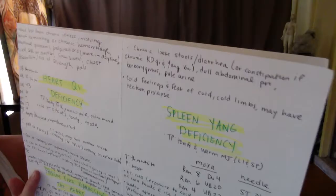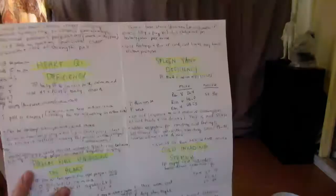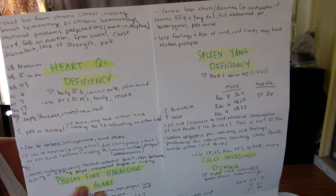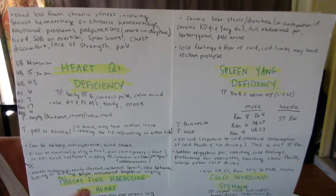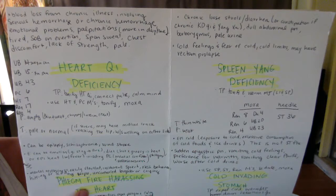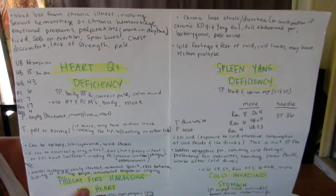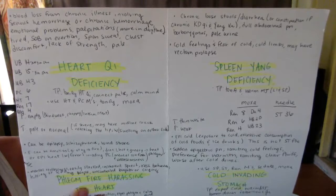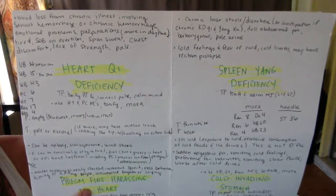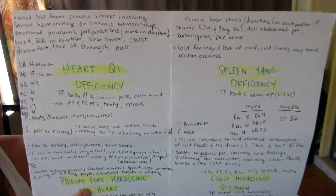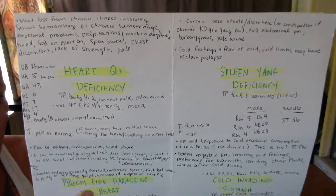Let's move on to the heart pathologies. Heart chi deficiency: blood loss from chronic illness involving serious hemorrhage, emotional problems, palpitations more in the daytime. Patients are also tired, shortness of breath on exertion, spontaneous sweat, chest discomfort, lack of strength. Heart chi deficiency patients are pale.